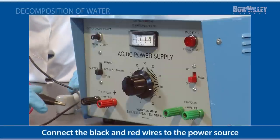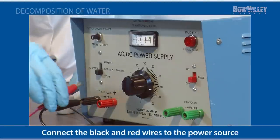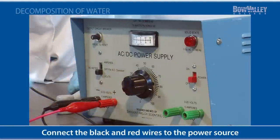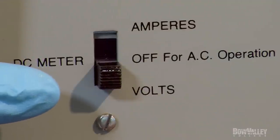Next, connect the black and the red wires to the power source. The power source should be set to volts. Plug the power source into a wall outlet.